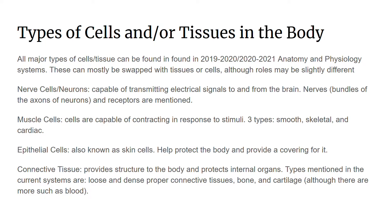Muscle cells are cells capable of contracting in response to stimuli. The three types are smooth, skeletal, and cardiac. Considering that anatomy and physiology this year covers the muscular system, this is important to know.